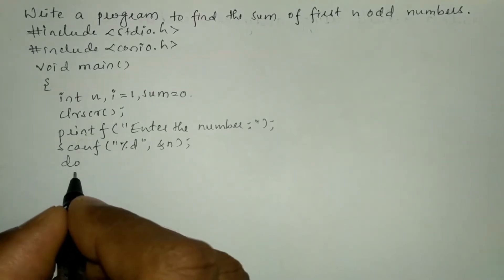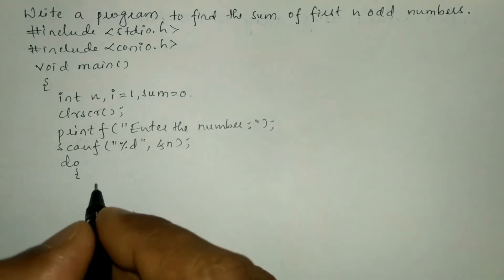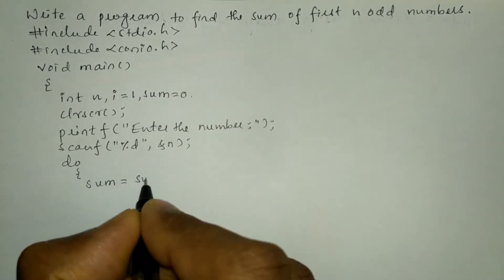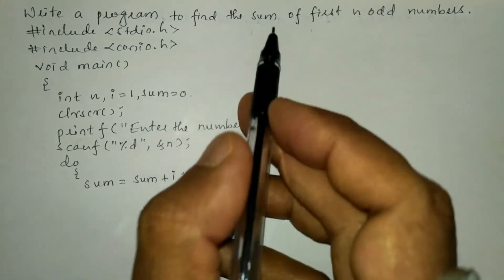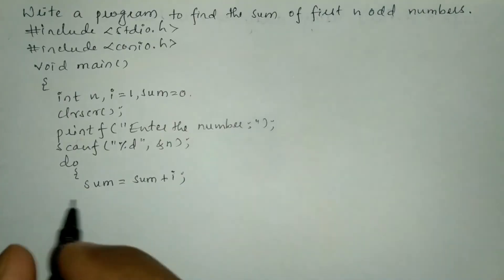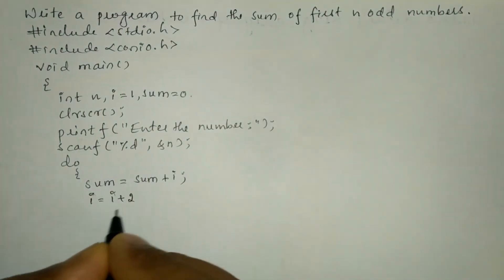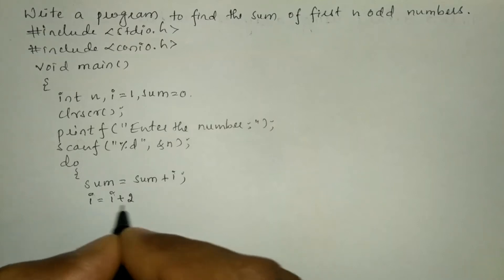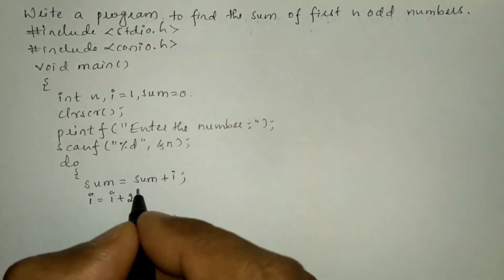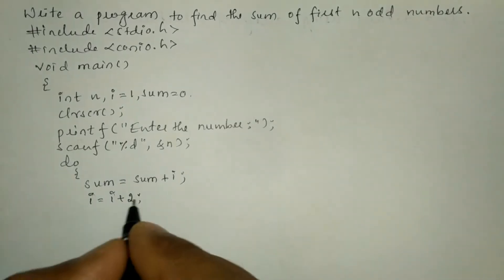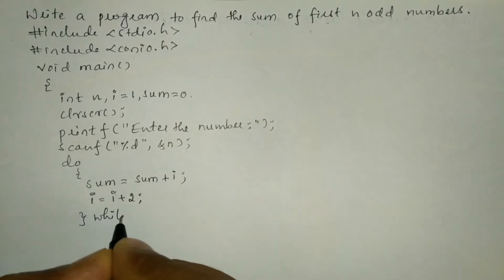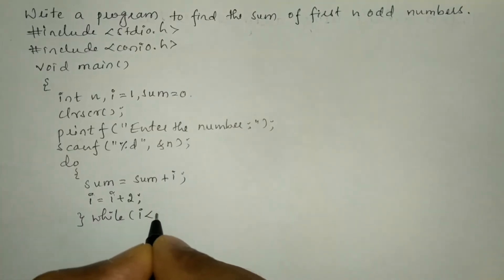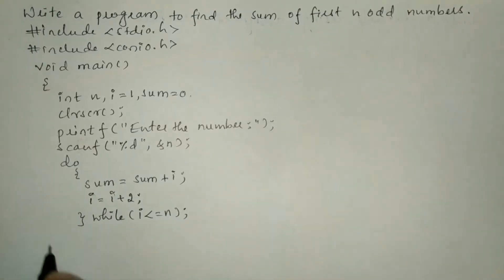Now we are going to use the do-while looping statement. 'do' is a keyword and should be written in lowercase. Curly open brace indicates the beginning of the body of the do-while construct. I'm going to write: sum is equal to sum plus i, to perform the addition for the sum of first N odd numbers. Next, i is equal to i plus two — because i starts at one, which is odd, and one plus two becomes three, the next odd number, then three plus two becomes five, and so on. Curly closing brace, then write 'while', and inside the bracket write the condition: i is less than or equal to n, put semicolon.